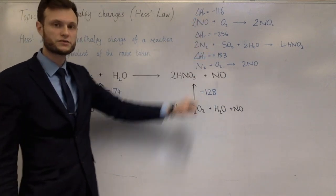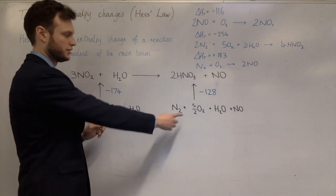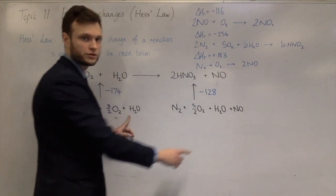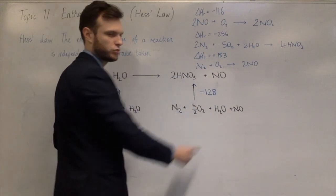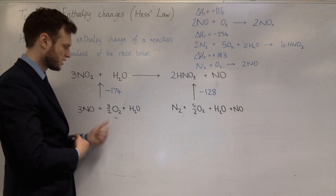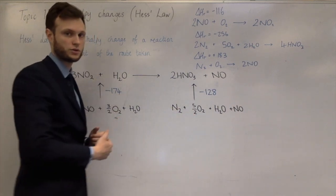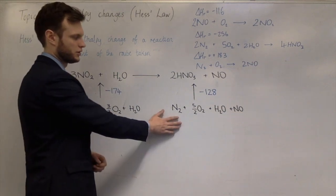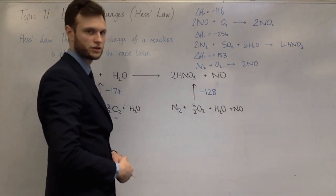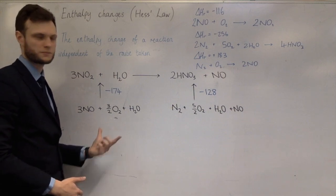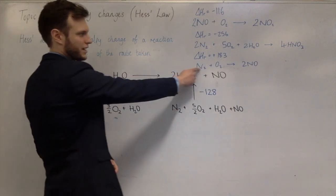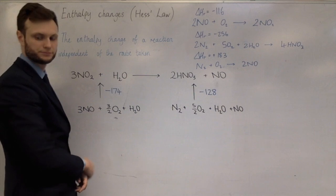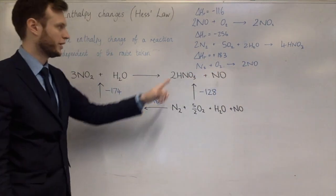I've now used two of the three equations and I've almost got a complete cycle but not quite. Looking at the differences between the two sides: water appears on both so it cancels. On one side there are three nitrogen monoxides and on the other there's one, so the left has two more nitrogen monoxides. On one side there's three-halves oxygen and on the other five-halves oxygen, so one side has one more oxygen molecule, and it also has one more nitrogen molecule. The difference is: on one side I have nitrogen and oxygen with two fewer nitrogen monoxides; on the other I have two extra nitrogen monoxides but no extra nitrogen or oxygen. That corresponds to the third reaction — reacting nitrogen with oxygen to make two nitrogen monoxides — in the same stoichiometric amounts.